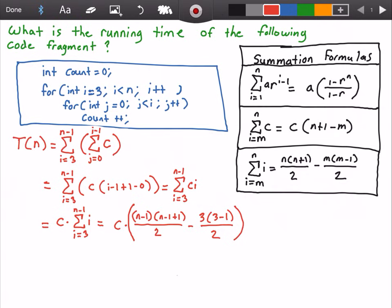Okay, and so let's simplify this a little bit. So we get C times n squared minus n over two minus six divided by two. And this is equal to C times